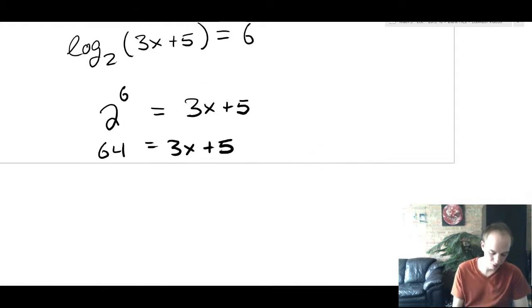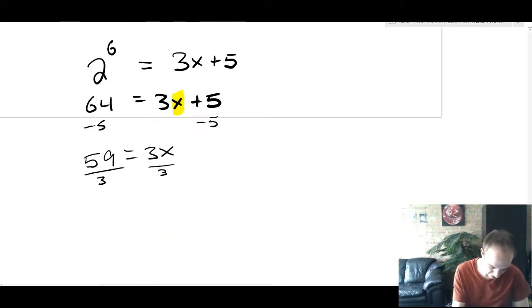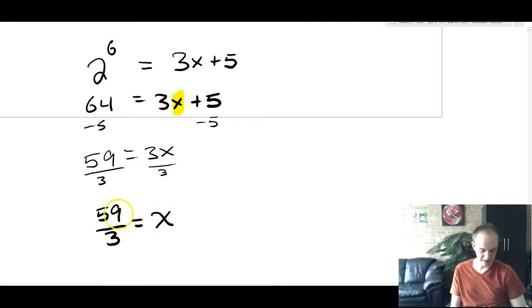So we're going to just write 2^6 as 64 = 3x + 5. And remembering that our goal here is again to isolate x. We're always trying to solve for x. We'll subtract 5 and we'll get 59 = 3x. And we'll divide by 3. And we'll get that 59/3 = x. And 59 is not evenly divided by 3 because it's 60 would divide by 3. So I think the best thing to do is just leave it as 59/3.